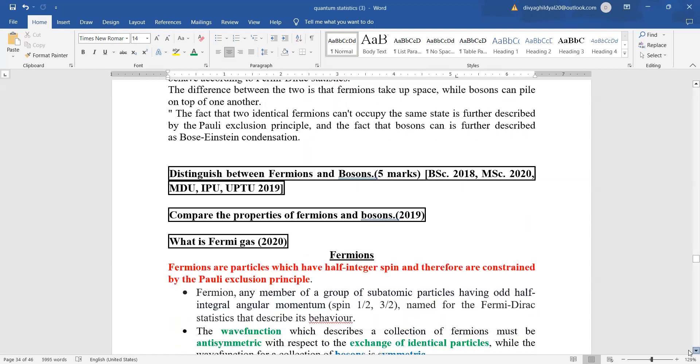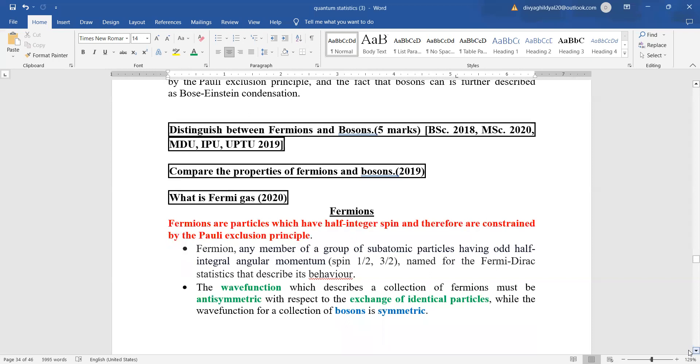Now, this question is asked a lot: distinguish between fermions and bosons, 5 marks, or you can be asked to compare the properties of the two or you can be asked to explain fermi gas. So let us begin.